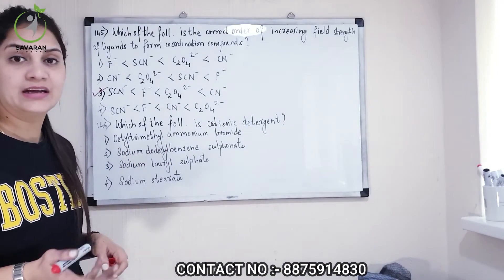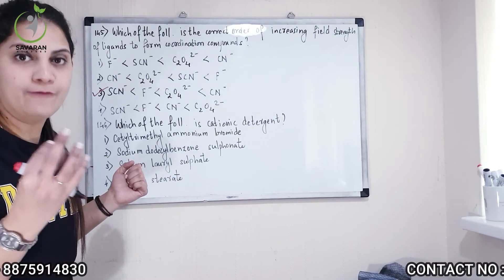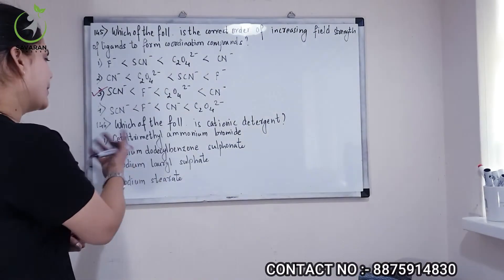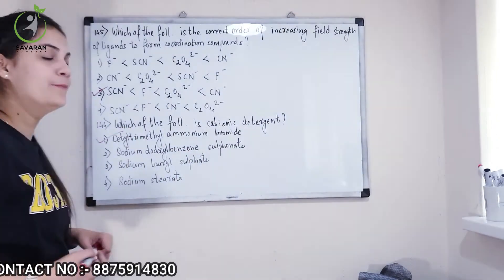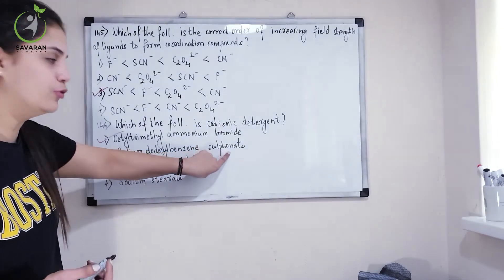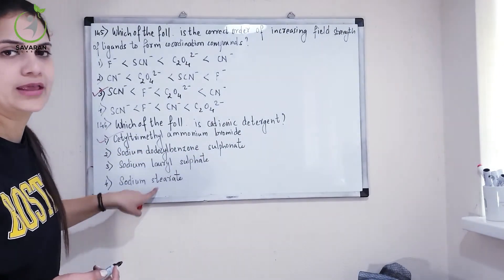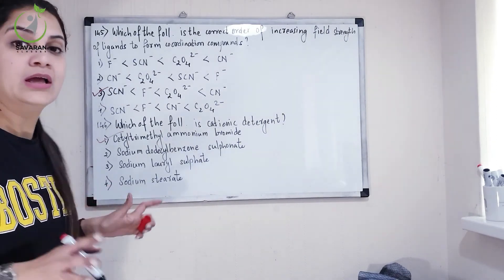Next, 146 - which of the following is cationic detergent? So you know ammonium detergent, what are cationic. So you have a first option - cetyl trimethyl ammonium bromide. This is going to be your cationic detergent. Apart from that if you have seen sulfonate, sulfate or stearate, what will be anionic detergent. I hope this is clear.